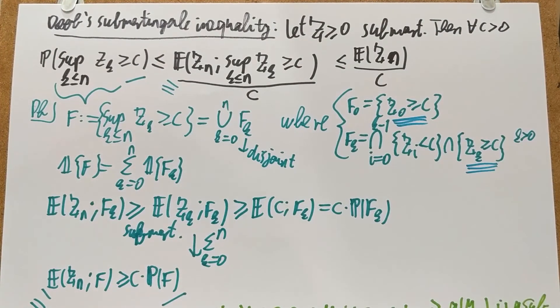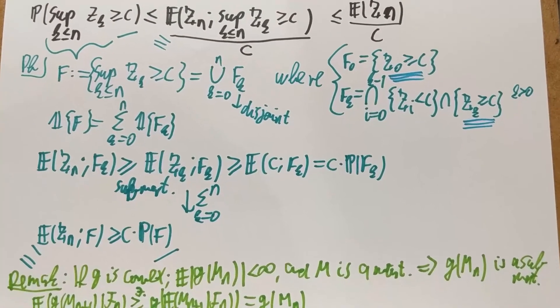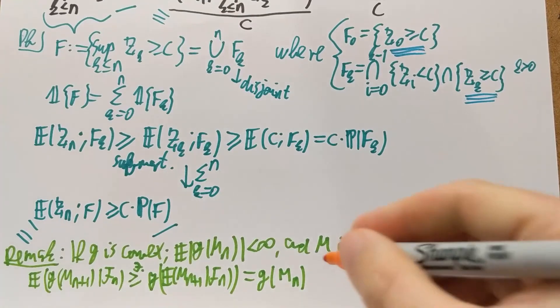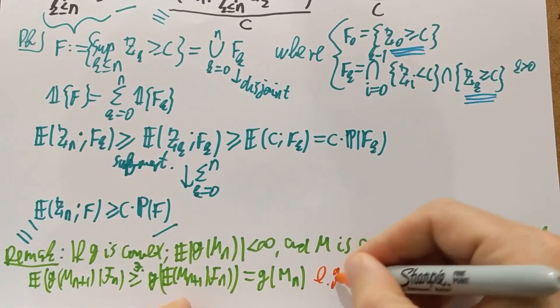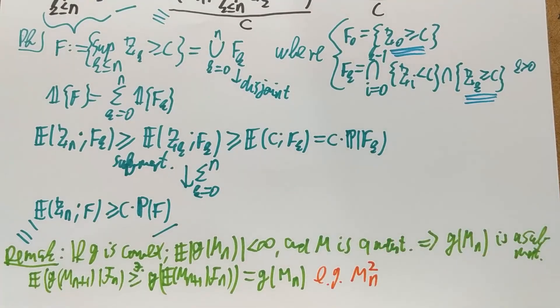So what is the most natural way of producing a non-negative convex function of any martingale? The nicest non-negative convex function, which people most often use, is, of course, the square function. So if you have an L2 martingale, and you take the square of it, that's going to be non-negative, and it's going to be a submartingale, and then you can apply the submartingale inequality.